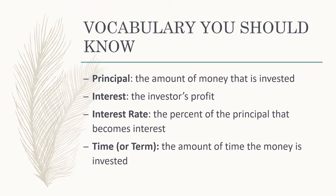A couple of vocabulary words you should know that you'll see a lot throughout this chapter. The first word is principal. Principal is the original amount of money that you invest — sometimes it's just the amount of money you start with. So if you go and open up a savings account at your local bank, the principal is going to be how much you have when you open up that savings account.